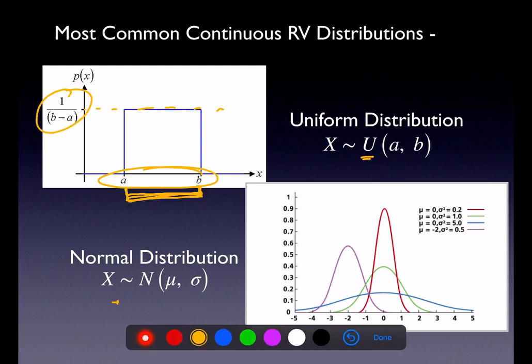When talking about the standard normal curve, we're talking about Z-scores. They are normally distributed, centered at zero, and have a standard deviation of one. Being centered at zero rules out the purple curve. Looking at which curve has a standard deviation of one — we're given variance (sigma squared). The green curve has a variance of one, and the square root of one is also one. So the green curve is actually the standard normal curve.